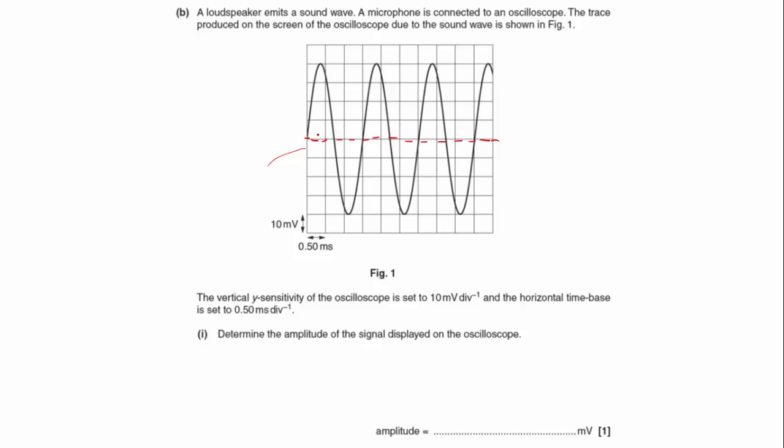So we need to count up. We've got one, two, three, four divisions up there. So four times 10 millivolts per division gives me an answer of 40 millivolts.